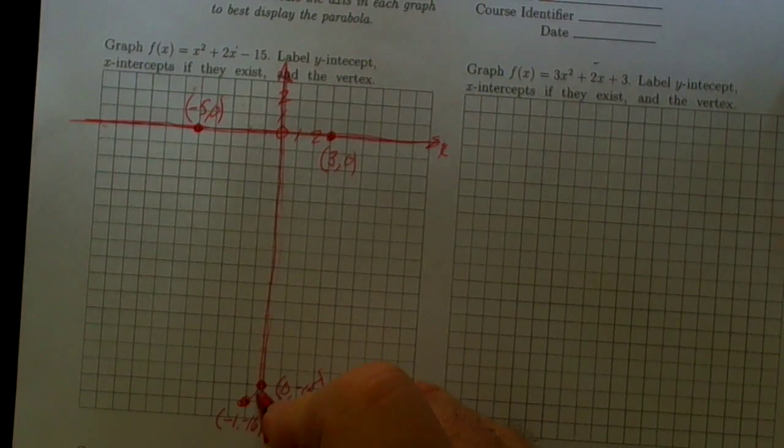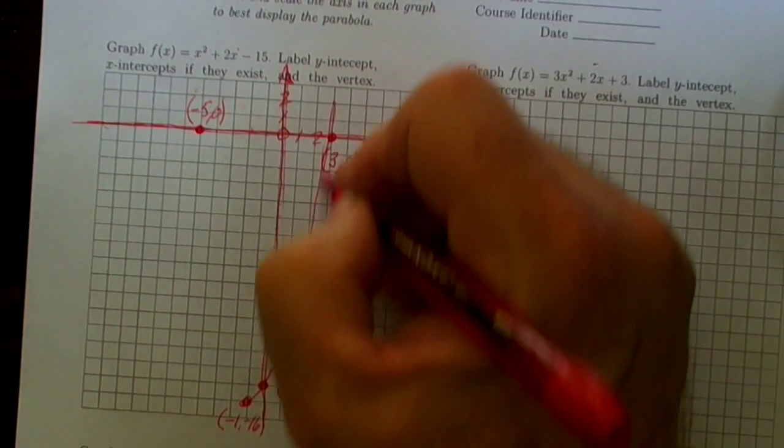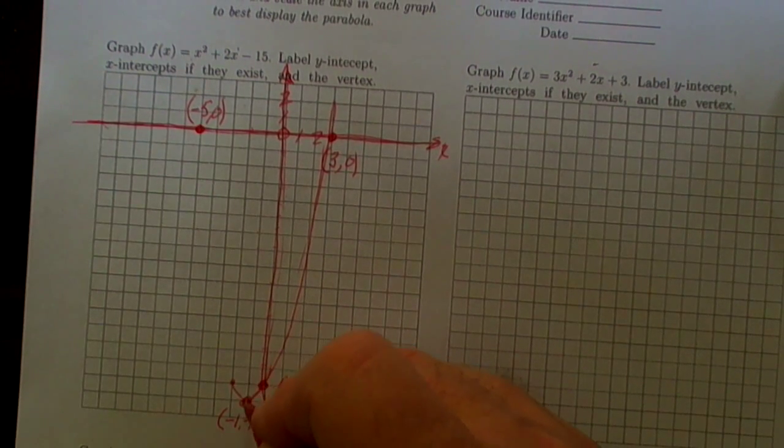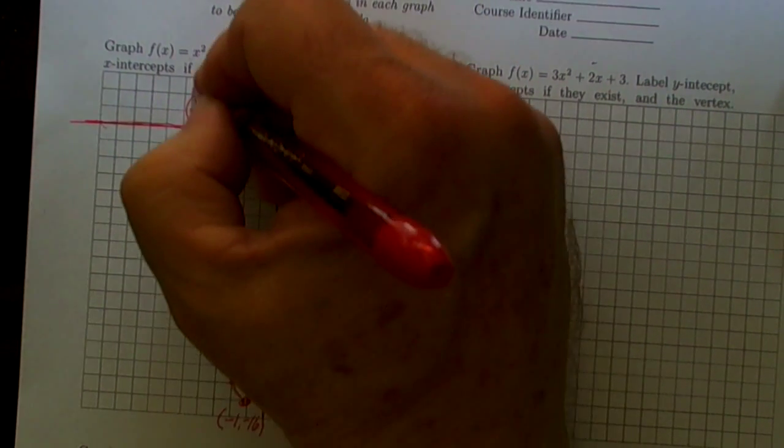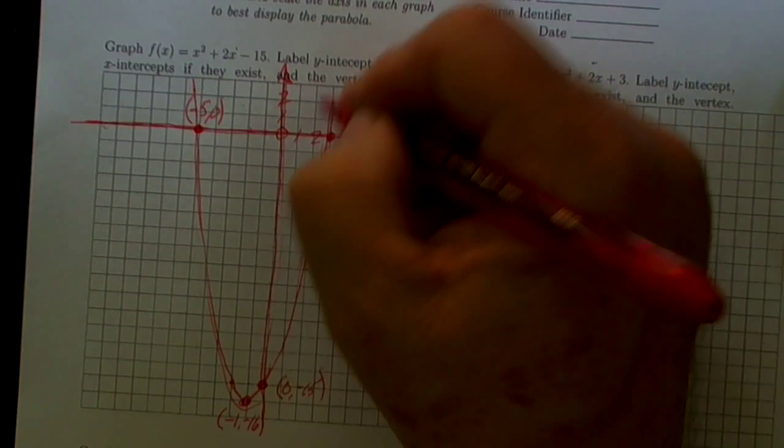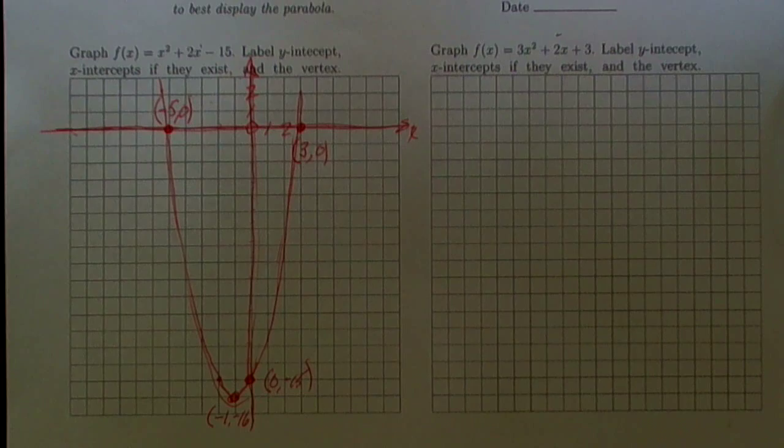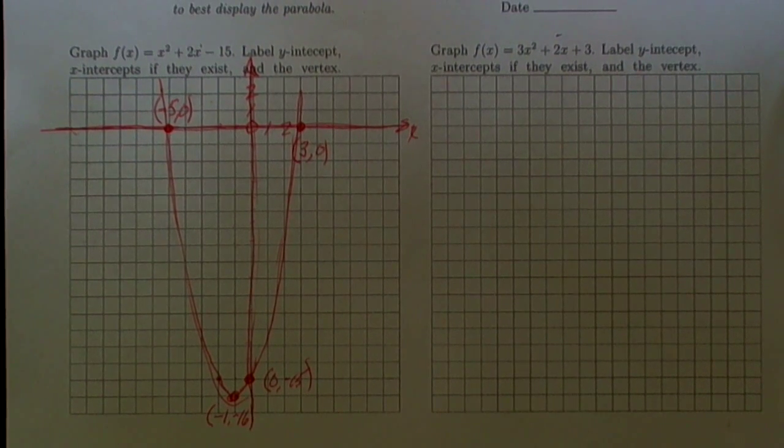This x-intercept was at (-5, 0). So I'm going to have a parabola that's looking about like this. Because of the symmetry, at this point it will have to go through this one. Okay, so the parabola will look much like that. Okay, that's the first parabola that we're going to look at.